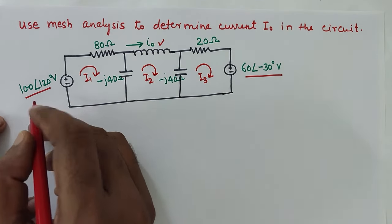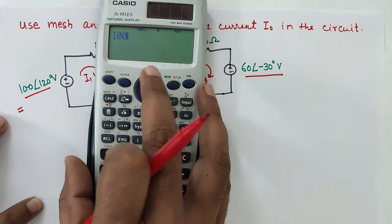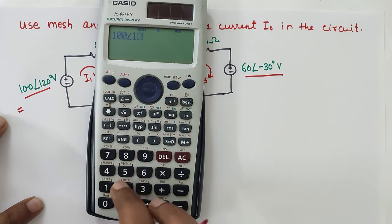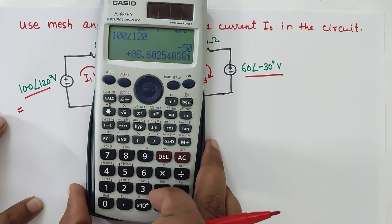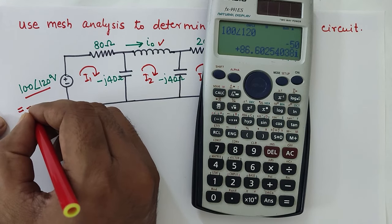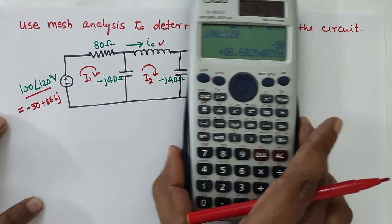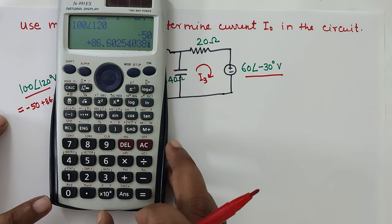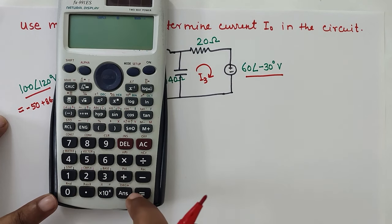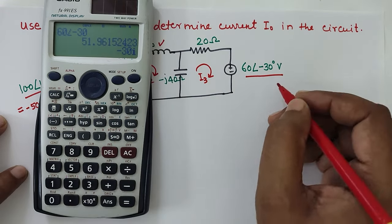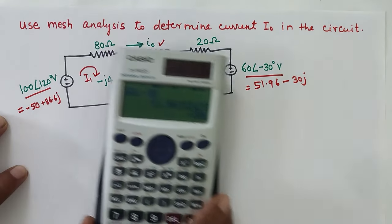Also, convert 100∠120° into complex form, which we can use a calculator to calculate. It will be 100∠120°, which is equal to -50 + 86.6j. Similarly, on the other side, we have 60∠-30°, which is equal to 51.96 - 30j. So these values we are going to use.